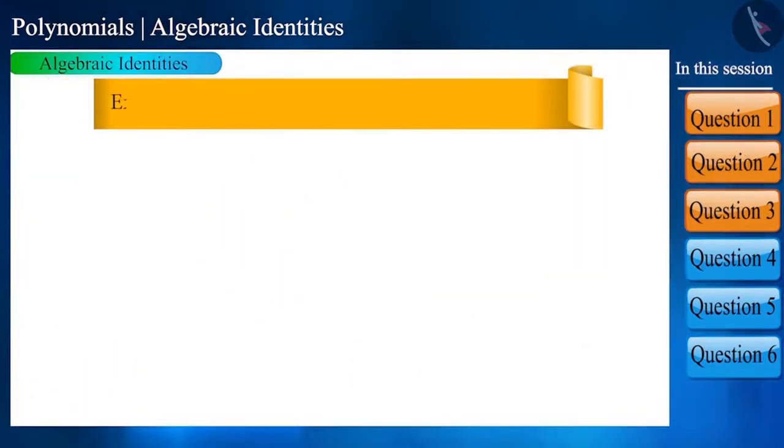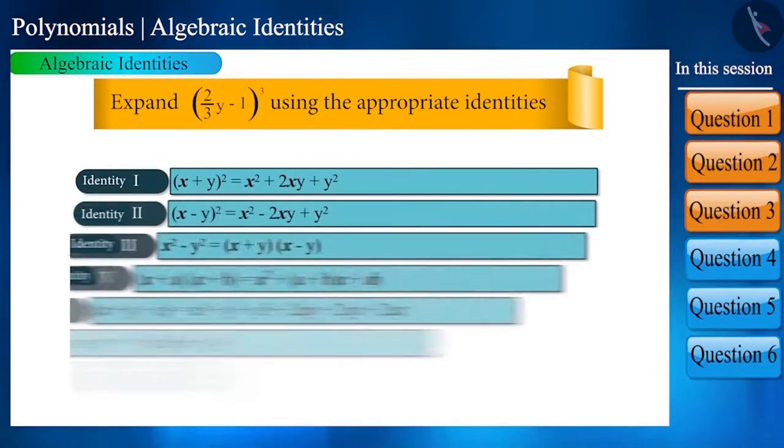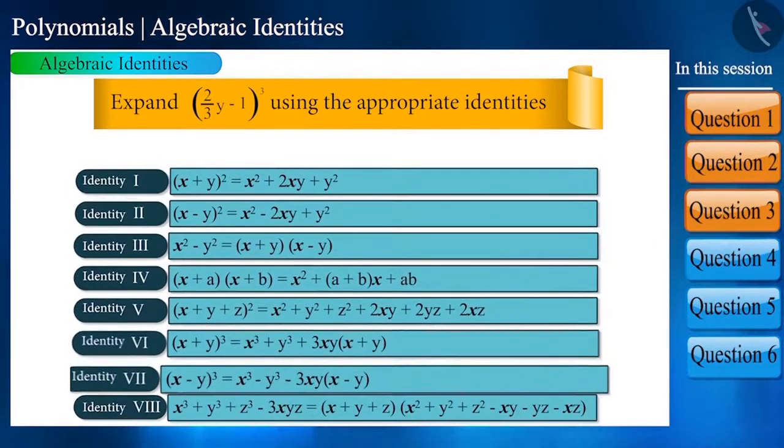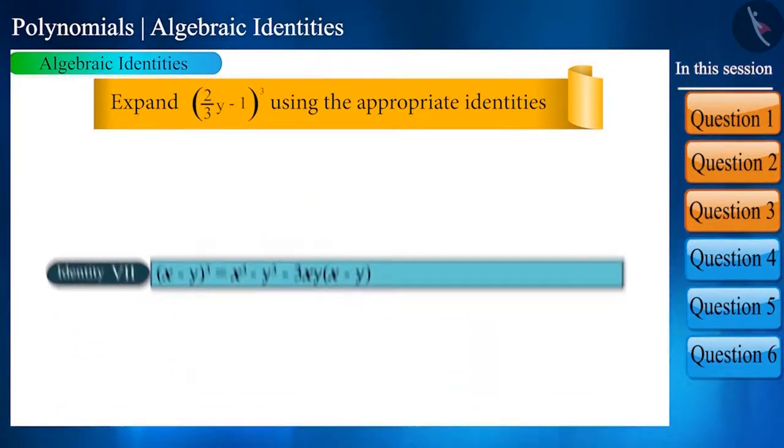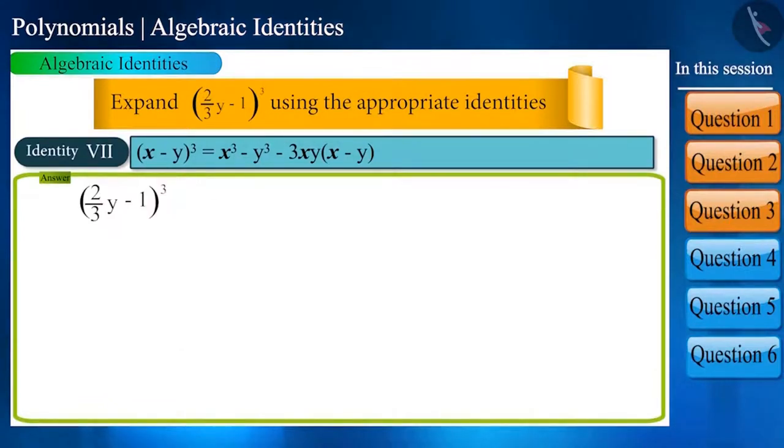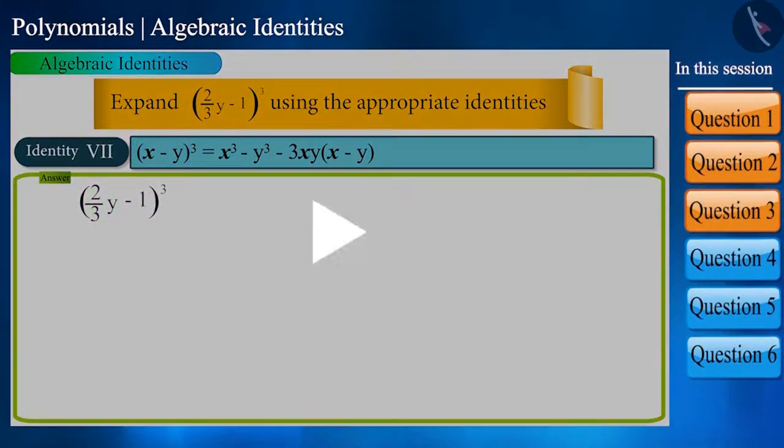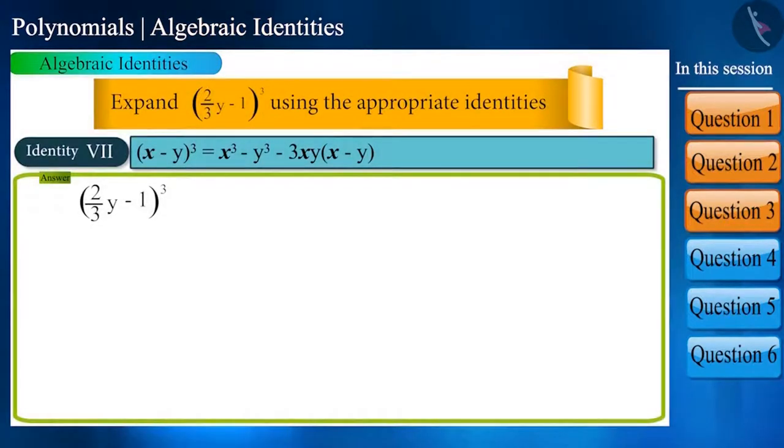Expand (2/3y - 1)³ using the appropriate identities. Here we have to use the identity directly, where x is 2/3y and y is 1. Pause the video and try to solve it yourself. The solution will be somewhat like this.